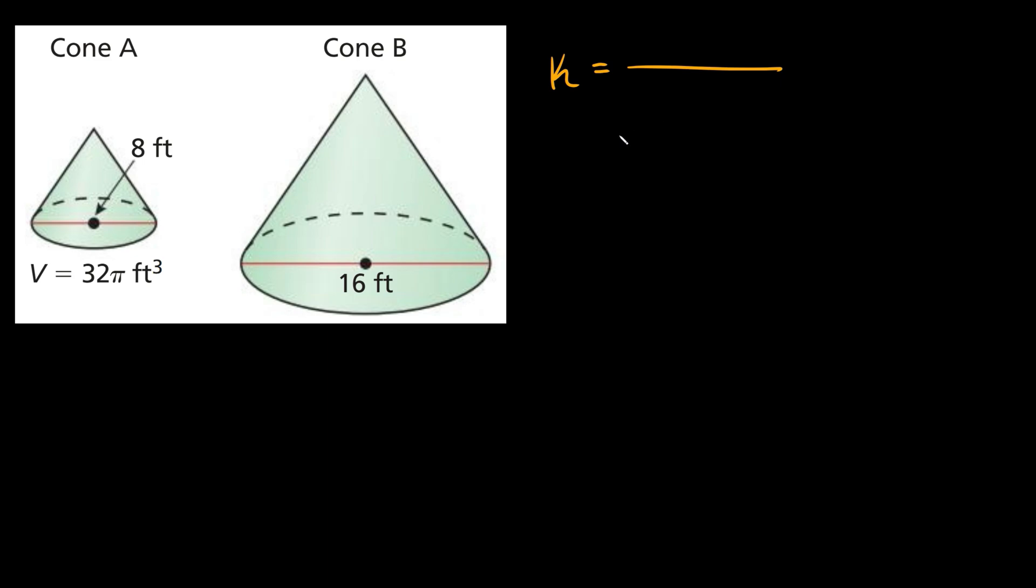So for instance we can compare two similar dimensions here because we know the diameter of cone B and we can compare that to the diameter of cone A since we also have that dimension. So we're going to compare the diameter of cone B to the diameter of cone A.